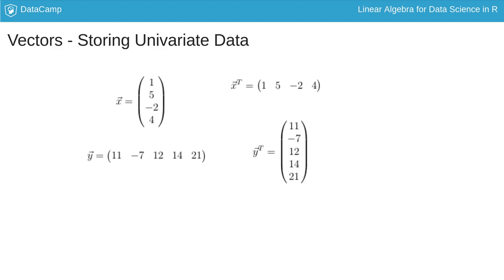The transpose of a column vector is simply the same vector made into a row vector, and vice versa, with the superscript t denoting transposition.